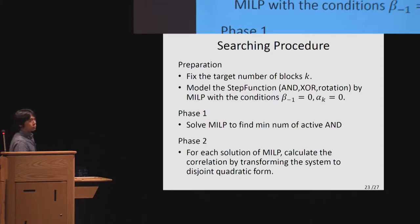This is the sketch of the searching procedure. First is the preparation phase. We need to fix the target number of blocks k. Of course, we can try several choices of k. Then we model the step function and the keystream generation by mixed-integer linear programming and by setting some conditions mentioned before. After I make the model, phase one is to solve mixed-integer linear programming to find the trail with minimum number of active AND gates. This just minimizes the number of active gates. Because it involves some dependent AND gates, it doesn't really mean that the results are best. After that, in phase two, for each solution of MILP, we calculate the correlation by transforming the system to disjoint quadratic form. This allows us to evaluate the correlation of the entire structure.